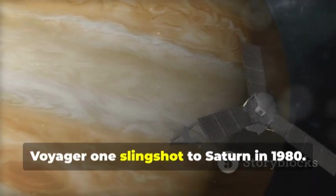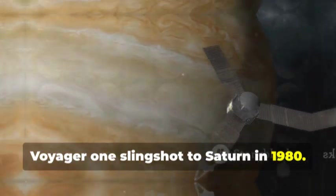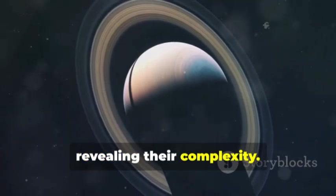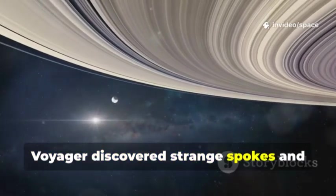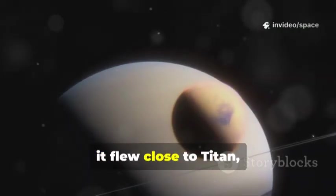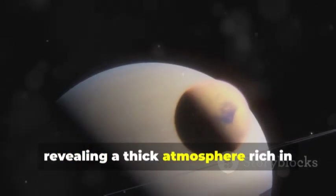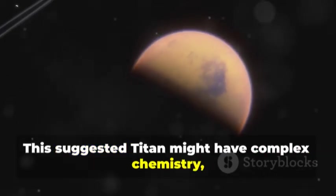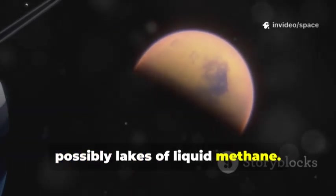Using Jupiter's gravity, Voyager 1 slingshot to Saturn in 1980. It revolutionized our understanding of Saturn's rings, revealing their complexity. Voyager discovered strange spokes and small moons acting as shepherds. At Saturn, it flew close to Titan, revealing a thick atmosphere rich in nitrogen and methane. This suggested Titan might have complex chemistry, possibly lakes of liquid methane.